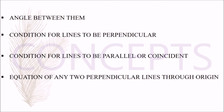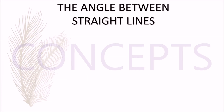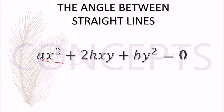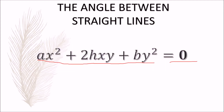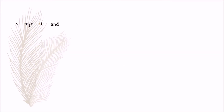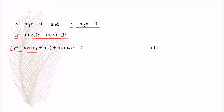In the first section, let us learn how to find the angle between straight lines represented by the equation ax² + 2hxy + by² = 0. This is a homogeneous equation of second degree and will represent two straight lines passing through the origin. Suppose these lines are y - m₁x = 0 and y - m₂x = 0. Multiplying these two equations gives: y² - xy(m₁ + m₂) + m₁m₂x² = 0. Let us call this equation 1.